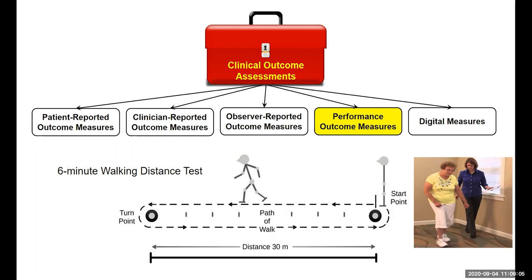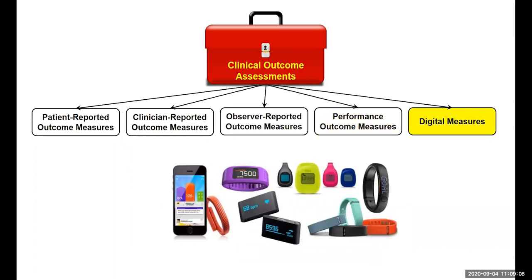There's another interesting category — digital measures — for which many are thinking about whether this fits within the toolbox of clinical outcome assessments or as a biomarker. If the digital measure is something like blood pressure or heart rate, that might be a biomarker. But if we're using a digital measure to assess activity, that might fall under the umbrella of a clinical outcome assessment, since a person might be less active if they're experiencing severe levels of pain.